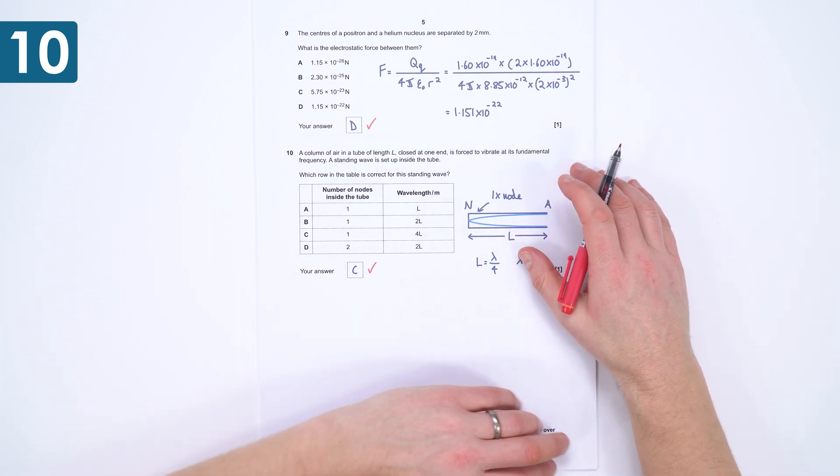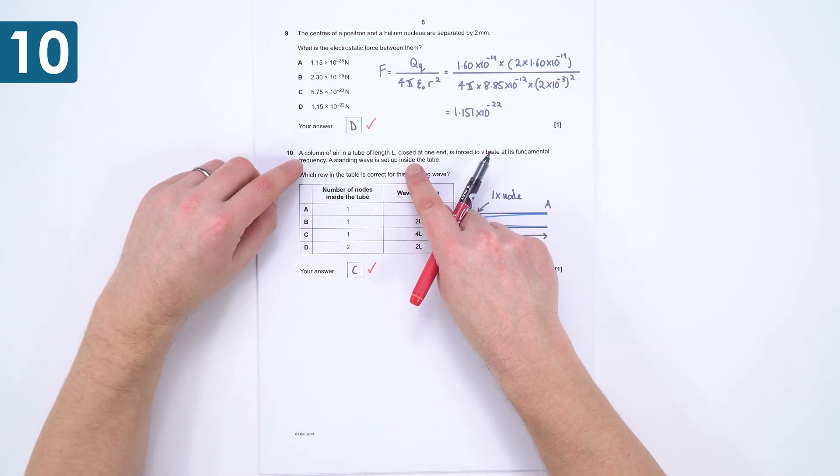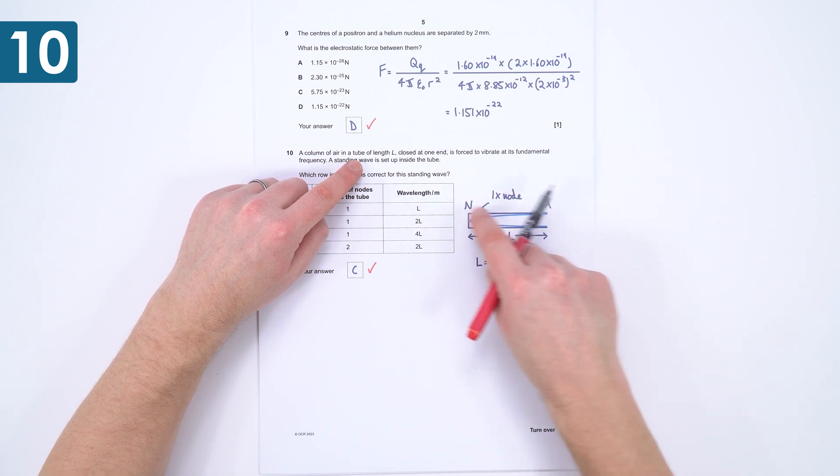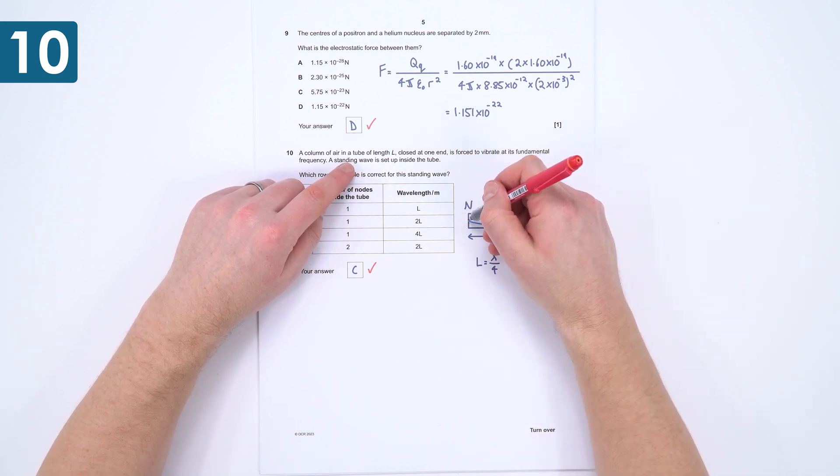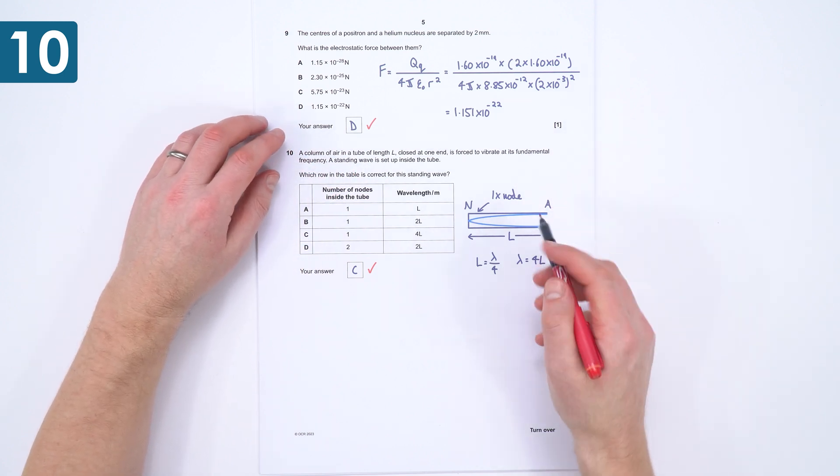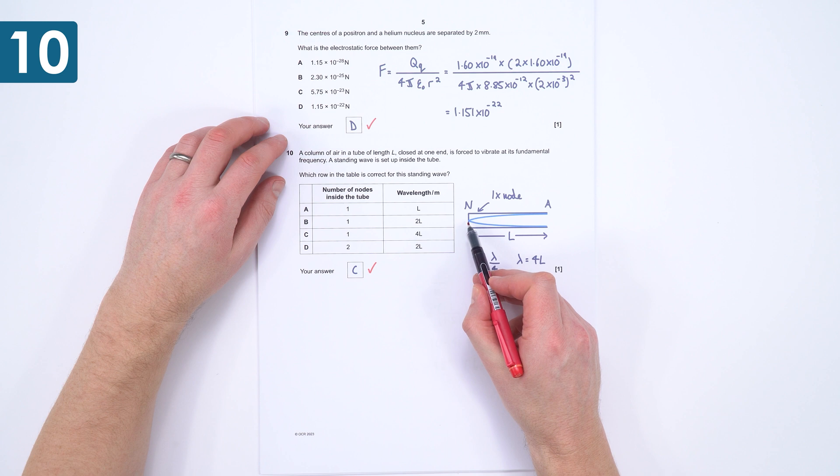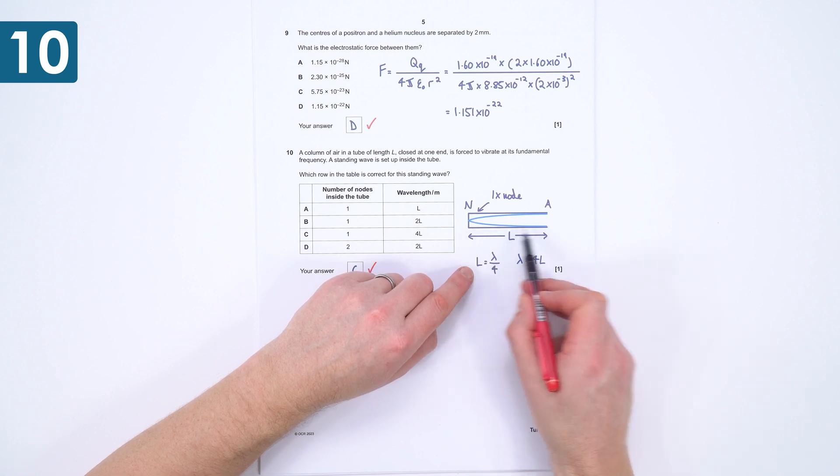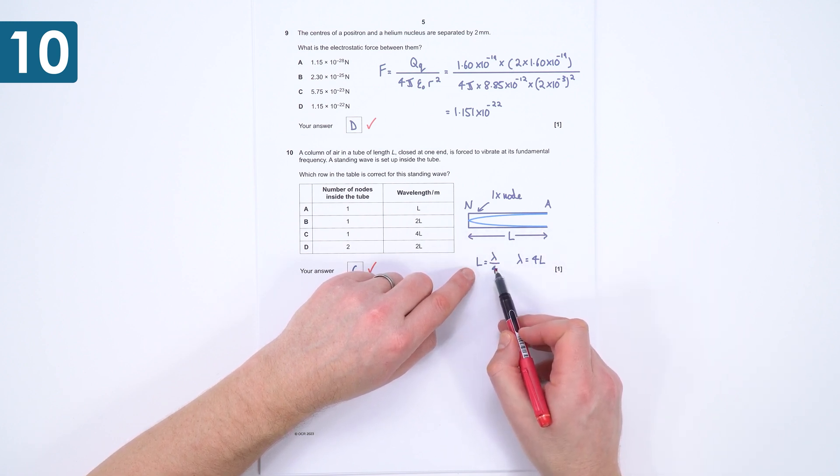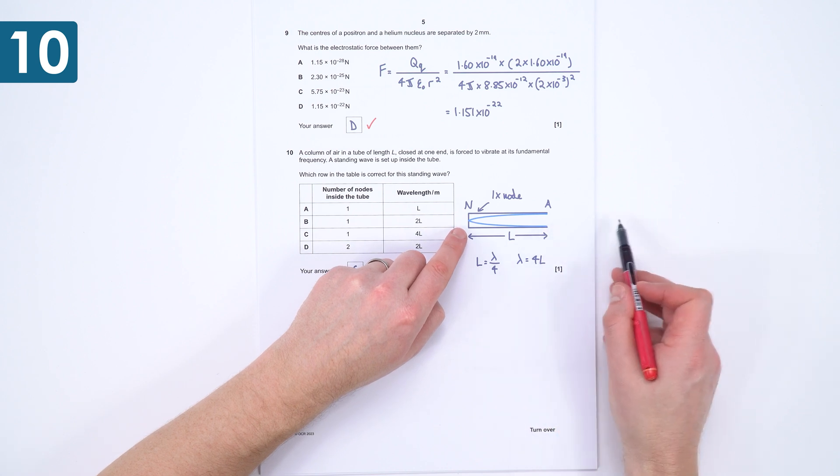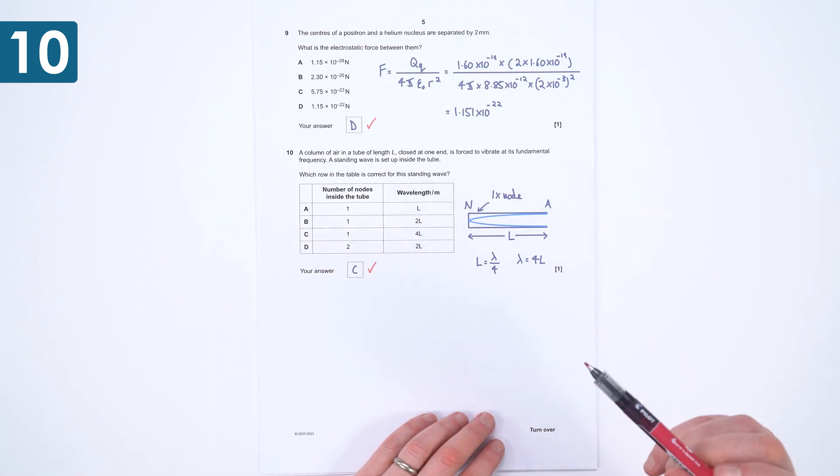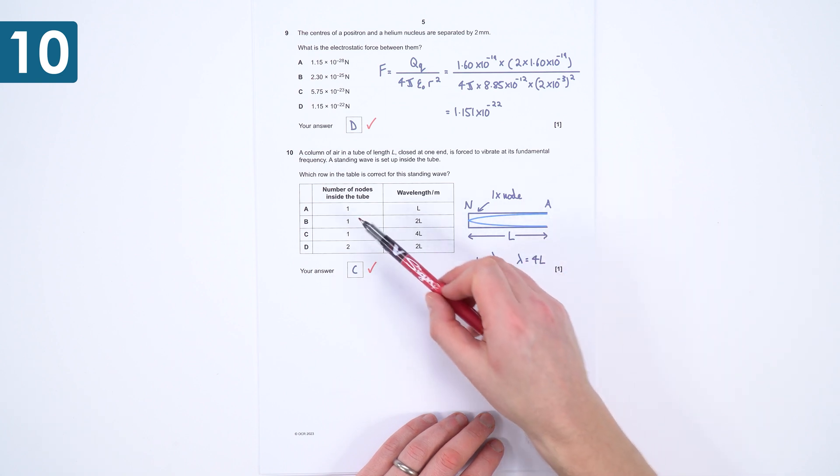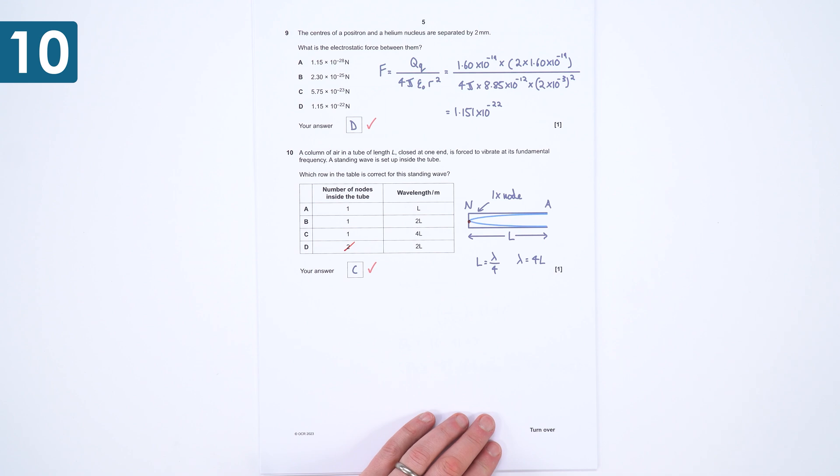For number 10, I think a diagram always helps. It says we've got a tube closed at one end, so that's my tube over here. Now if we've got that, we're always going to have a node at the closed end and an anti-node at the open end, and then I just put in the picture of the wave here. So effectively we go from a node up to an anti-node. Now that's going to be equal to a quarter of the wavelength. So the length of the tube is equal to the wavelength over four, so that means the wavelength is going to be equal to four times this length. So the number of nodes inside the tube is going to be one, which is this one over here, so it can't be D. And the wavelength is going to be 4L, so it can't be 2L, and that means the only correct answer for this is C.